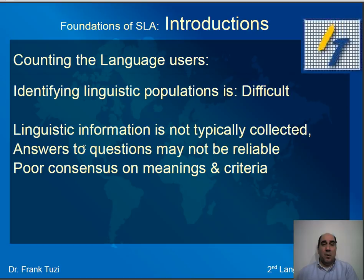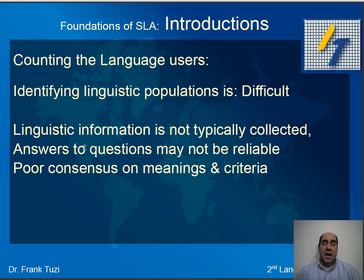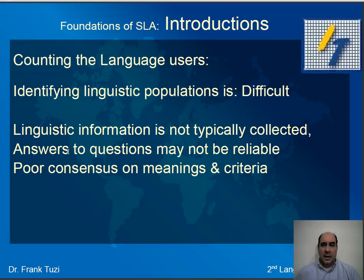There are several reasons why linguistic population data is unreliable. People may be afraid to report which language they speak for fear of prejudice or being relegated to minority status — so they may withhold that information. It may be a power issue. Additionally, there's poor consensus on the meaning of certain words, like language dominance — which language is dominant and which isn't — so people may not understand how questions are defined, making the data less reliable.